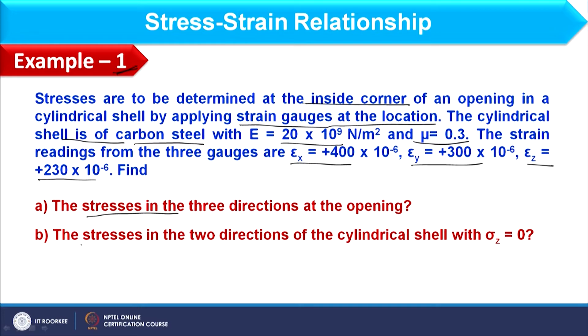The second part focuses on stresses in two directions of the cylindrical shell where σ_z = 0. These two parts will be solved for Example 1.